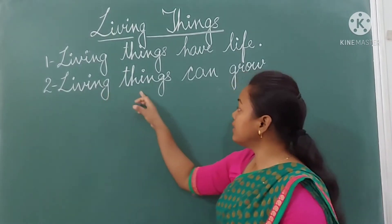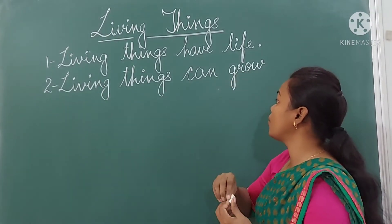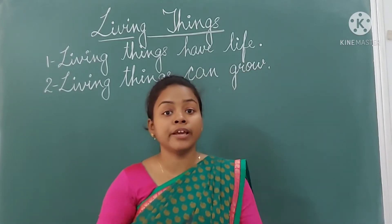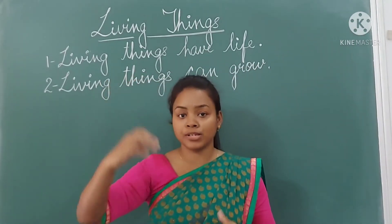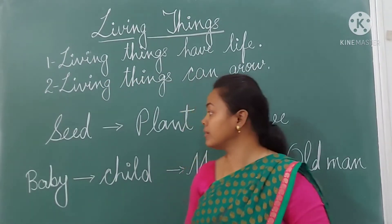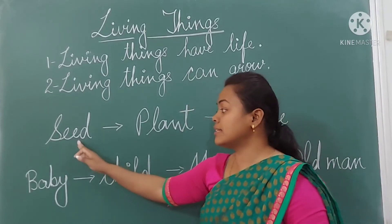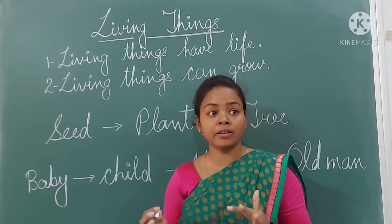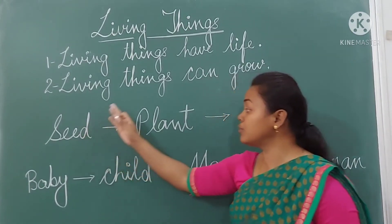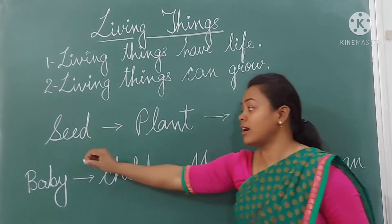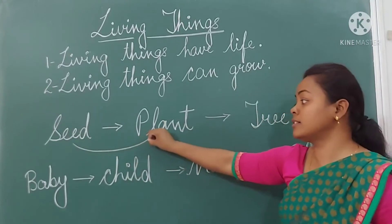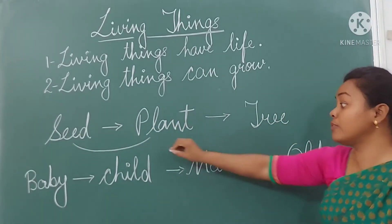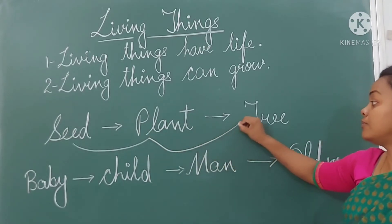The second characteristic: living things can grow. Living things chote se bade ho sakte hai. For example, a seed changes into a plant, and then the plant changes into a full grown tree.